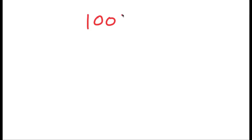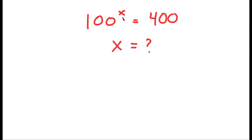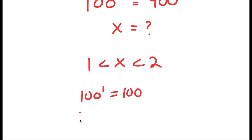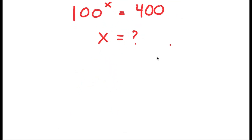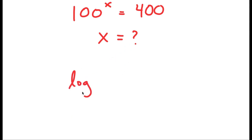In this video, I'm going to solve an interesting exponential equation. My equation is 100 to the power of x is equal to 400, and I want to find the value of x. We can see that x is going to be between 1 and 2, because 100 to the power of 1 is 100 and 100 to the power of 2 is 10,000. So it's going to be closer to 1 than to 2, but somewhere in the range of 1 and 2.